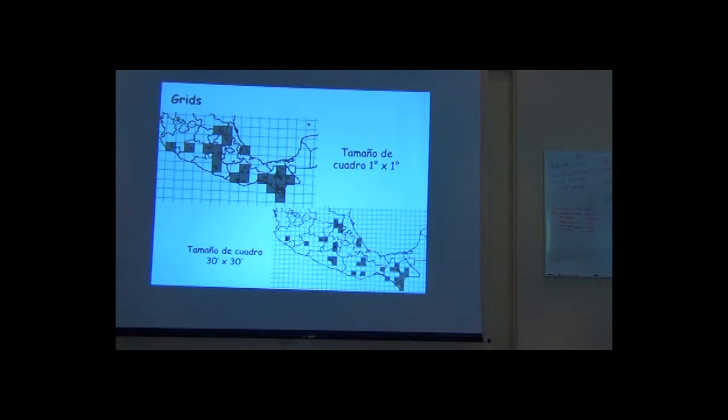Another way to generate hypotheses on the distribution of the taxa is using a method pulling distributions in a grid. We call this the grid generated distribution. This method is very simple and it's very useful and it's being used in many instances. What we do is we generate a grid of certain size over the area that we want to survey and we want to highlight the squares in which we have records of the species.